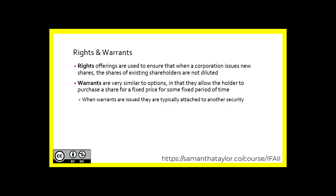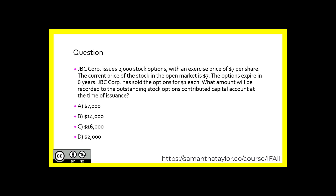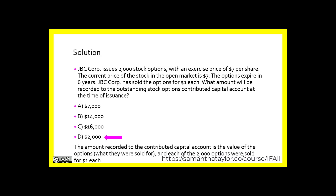Let's look at a question. JVC Corp issues 2,000 stock options with an exercise price of $7 per share. The current price of the stock option in the open market is $7. The options expire in six years. JVC Corp has sold the options for $1 each. What amount will be recorded to the outstanding stock options contributed capital account at the time of issuance? Is it A) $7,000, B) $14,000, C) $16,000, or D) $2,000? The correct answer is D) $2,000. The amount recorded to the contributed capital account is the value of the options — that is, what they sold for — and each of the options was sold for $1 each.